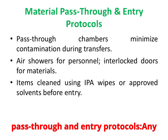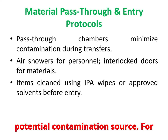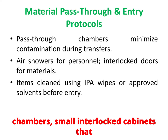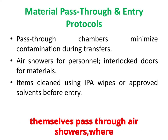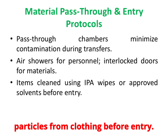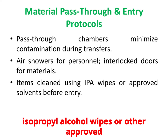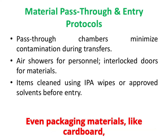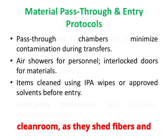Any object entering a clean room is a potential contamination source. For materials and tools, we use pass-through chambers — small interlocked cabinets that allow materials to be transferred without letting unfiltered air in. Personnel themselves pass through air showers, where high-velocity HEPA-filtered air blows off particles from clothing before entry. Materials are often cleaned with isopropyl alcohol wipes or other approved solvents before being brought inside. Even packaging materials like cardboard are generally prohibited inside the clean room, as they shed fibers and particulates.